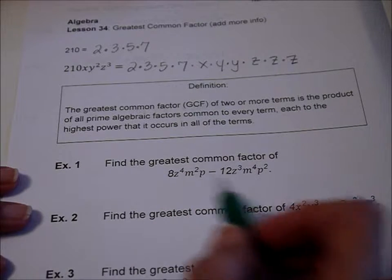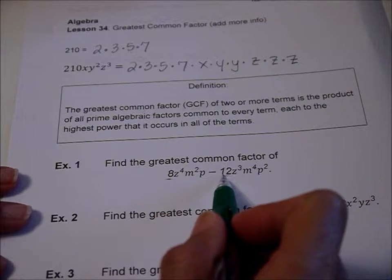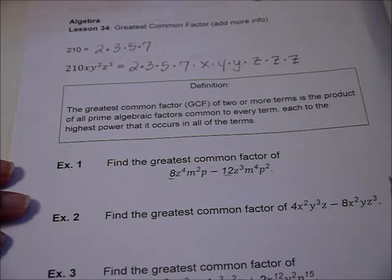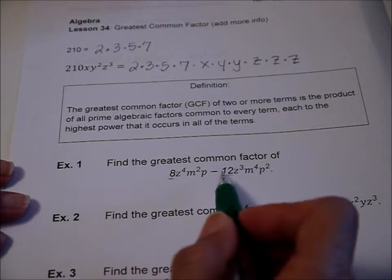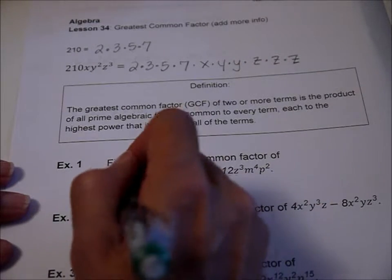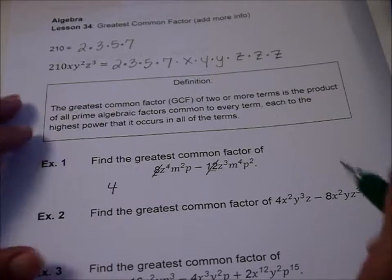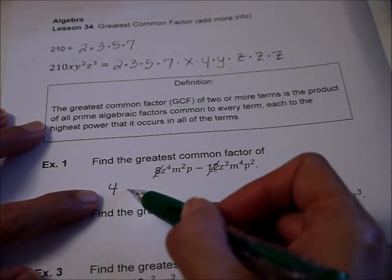And what that means is let's just start with the numbers. The biggest number that goes into 8 and 12 without a remainder. Well the biggest thing that goes into 8 and 12 would be a 4. So we've dealt with that. We can even cross that out just for now. We're not going to usually do that but I just want you to see. So we've dealt with our 8 and 12 and it's a 4.